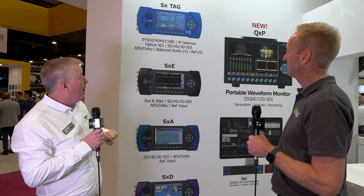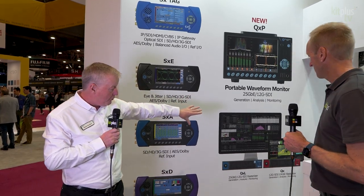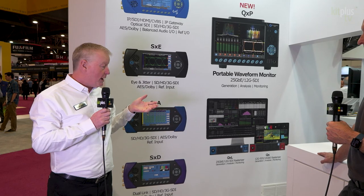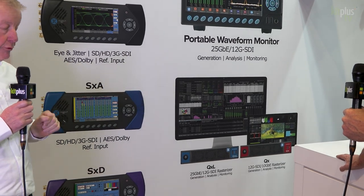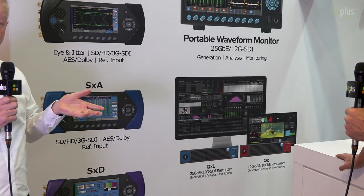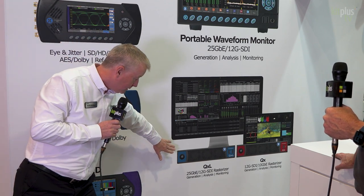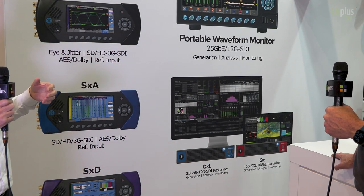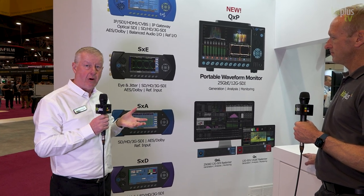In the range, we start with the TAG — fantastic entry-level price point for ST 2110 support. Then we move to the QX, the unit in red, which is predominantly SDI, so we're focusing 12 gig SDI customers toward that unit, though it also has the capability to add 2110. For customers specifically interested in 2110, we're positioning the QXL — the blue unit — because it starts life as an IP-only unit but has the option to add SDI, including SDI with jitter analysis for physical layer testing.